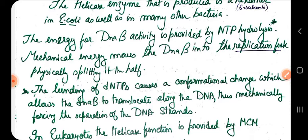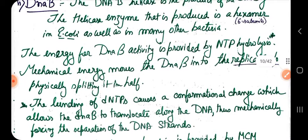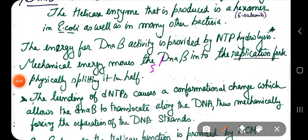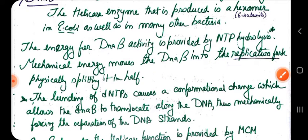The replication fork moves in the direction from 5' to 3', and helicase is moving in that direction to unwind the DNA strands, providing the space needed by enzymes like primase and DNA polymerase 3 to do their work.